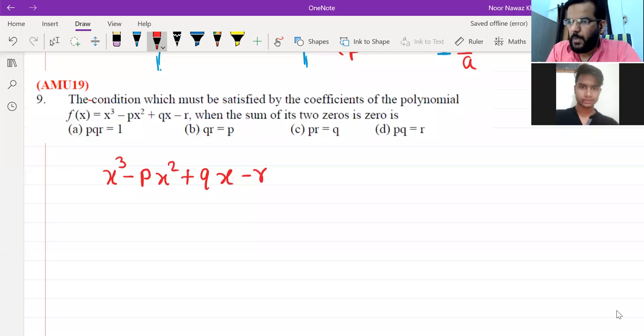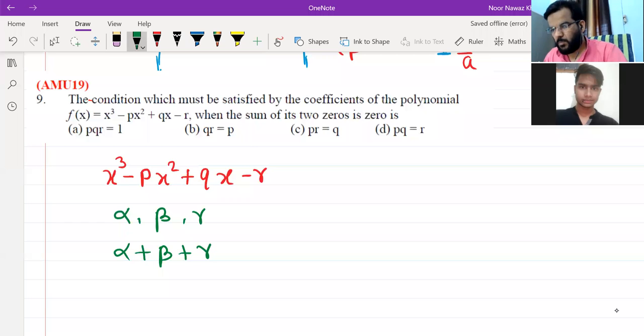And we have given that we have a cube, so we have three zeros. So we have one alpha and one beta and we have one gamma. Alpha plus beta plus gamma. One sum, individual sum.